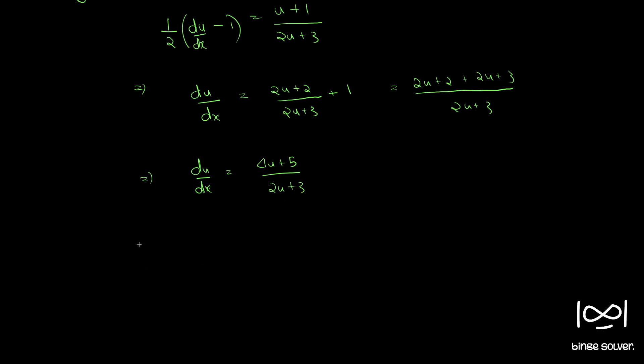Separation of variables, bring u to one side and x to the other. So that gives 2u plus 3 by 4u plus 5 du equal to dx.